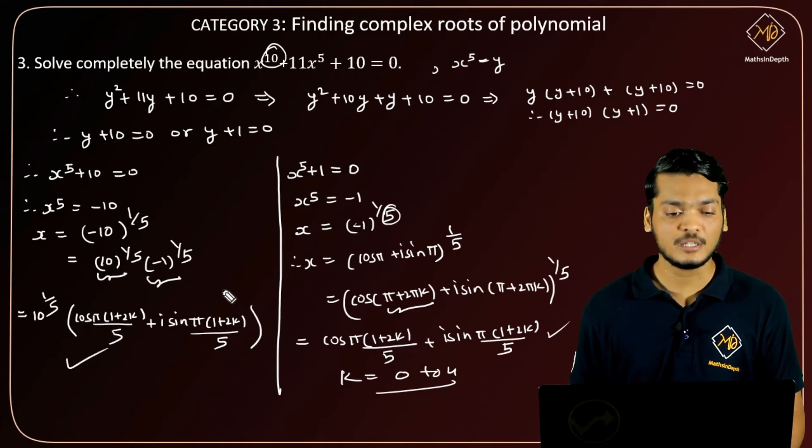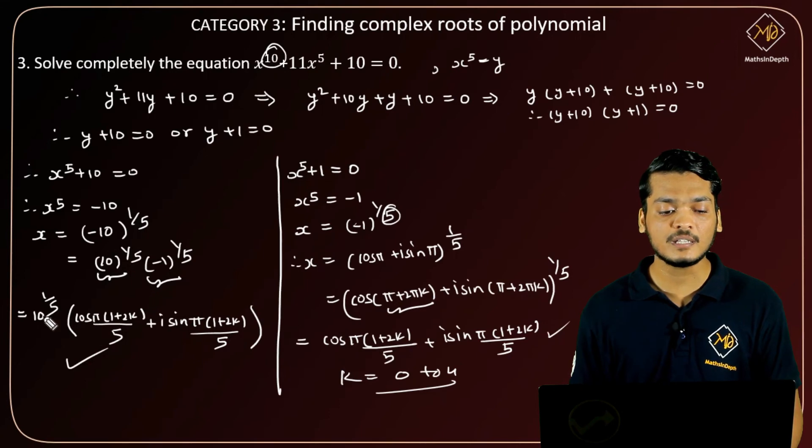(π(1+2k)/5)]. So this is the expression for this x, and this is the expression for that x. Both differ by the factor 10^(1/5). So when you put k = 0, 1, 2, 3, 4